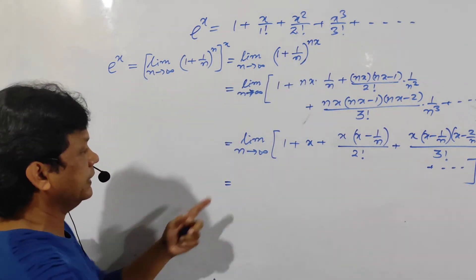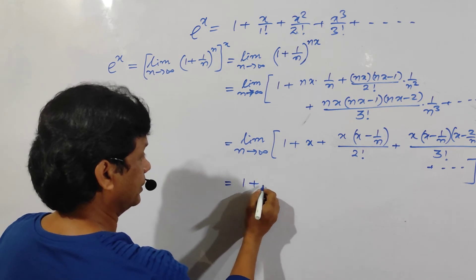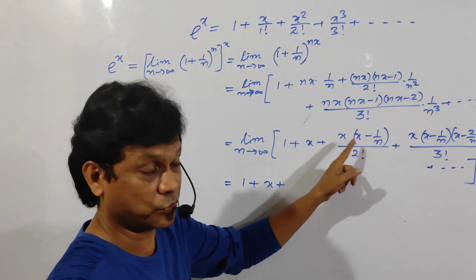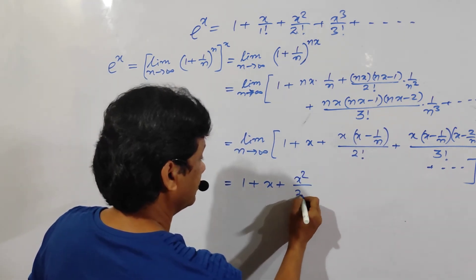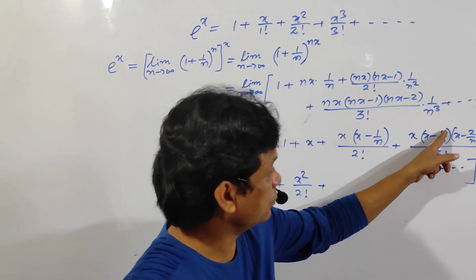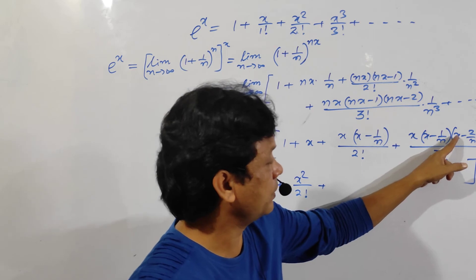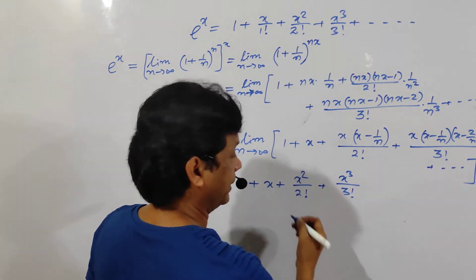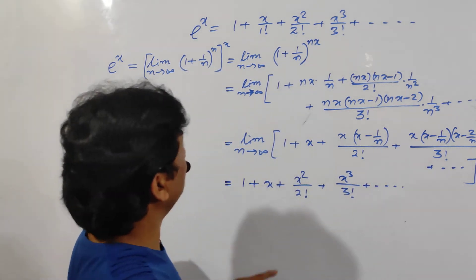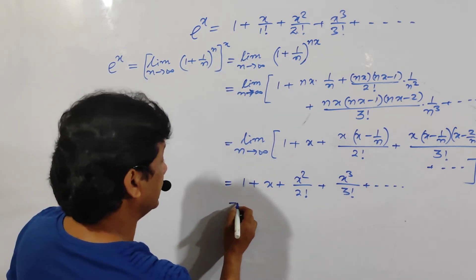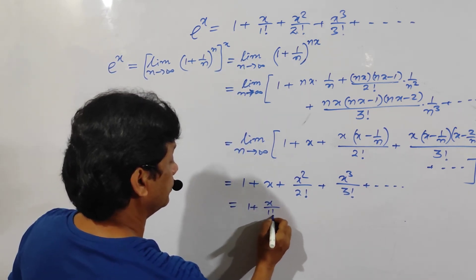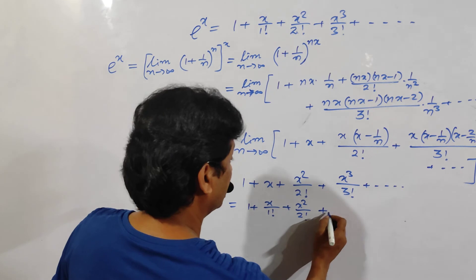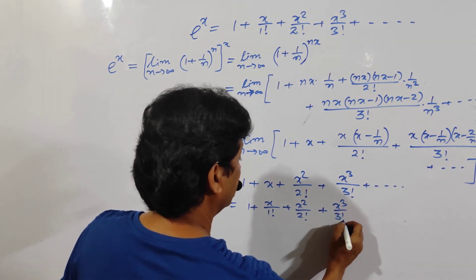So now take the limit: 1 plus x plus — this 1 by n tends to infinity becomes 0, so x into x is x squared, divided by factorial 2. This will tend to 0, this will tend to 0, so x into x into x is x cube by factorial 3, plus 1. So I can write: 1 plus x by factorial 1 plus x squared by factorial 2 — because factorial 1 is 1 — plus x cube by factorial 3 plus 1.